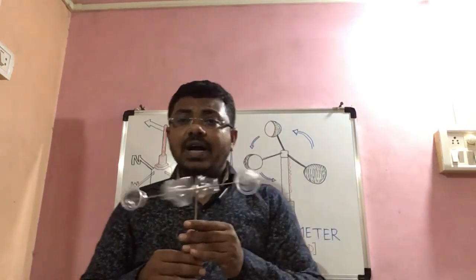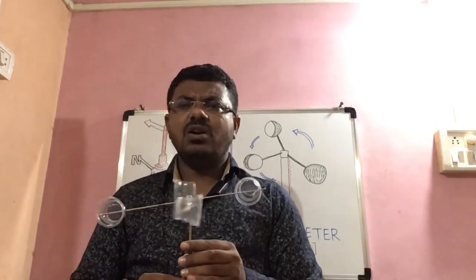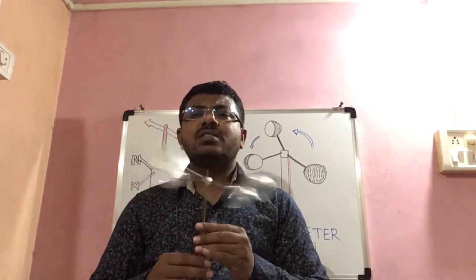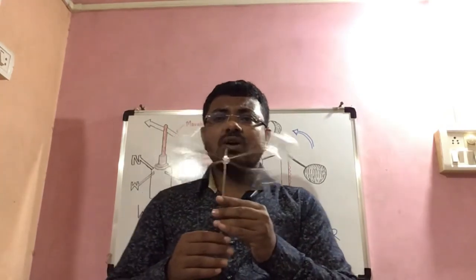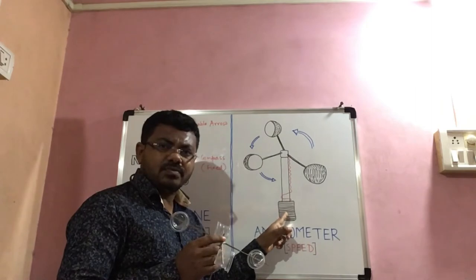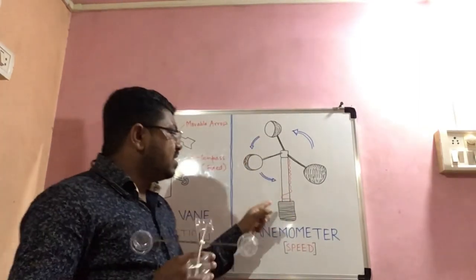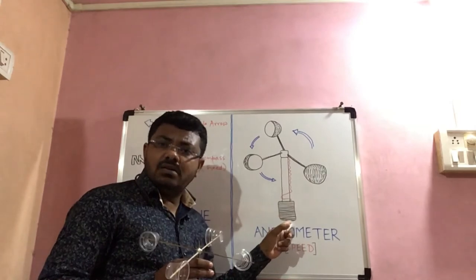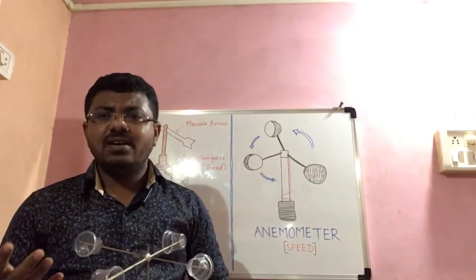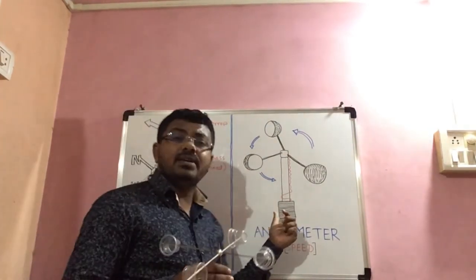If a slight wind is blowing, then the cups will rotate slowly. If the wind is blowing with high speed, then they will rotate with high velocity. The cups rotate and there is a wire connected to a meter at the base. At whatever speed the wind is blowing, that speed will be registered in the meter — generally measured in meters per second.